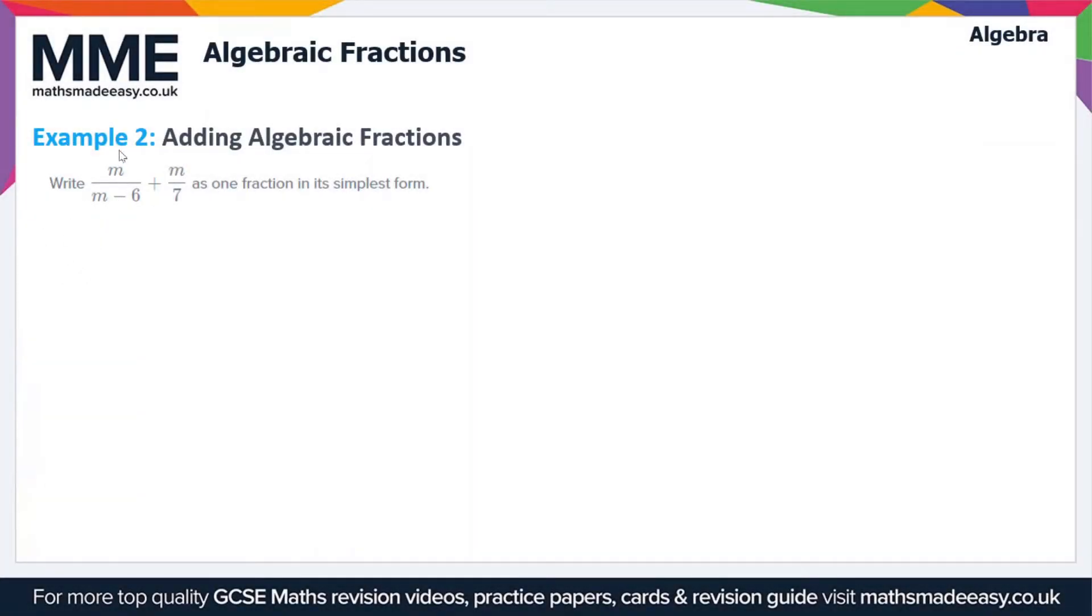In this second example we're adding two algebraic fractions together. We have m/(m-6) and we're adding that to m/7. The rule is that we need to get a common denominator by multiplying the numerator and the denominator of one fraction by the denominator of the other.